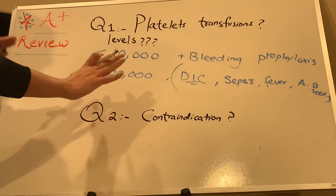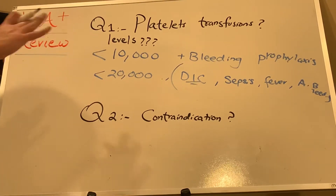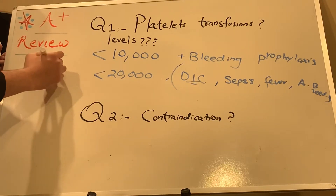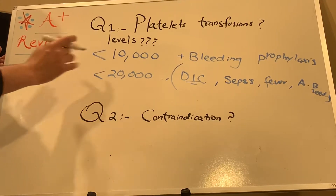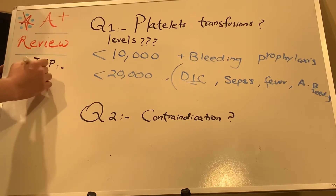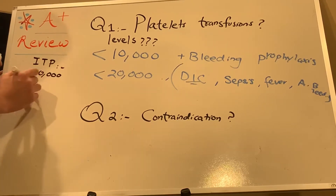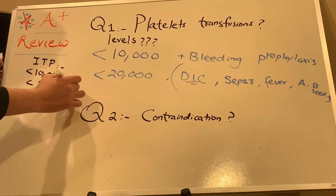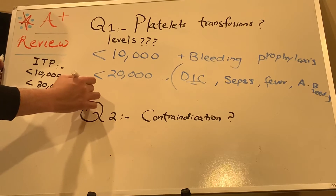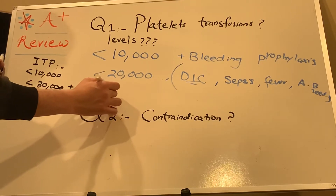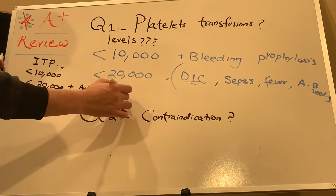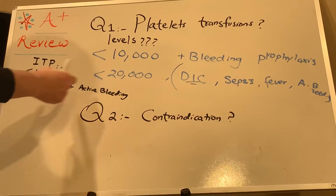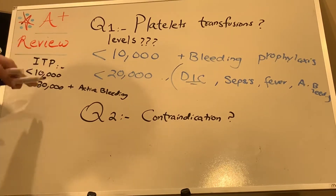Now, other than that, I'll go with the 50,000 level, but before that let's talk about ITP — what are the things we need to remember for ITP and what are the levels? It's slightly different: less than 10,000 you have to give, and less than 30,000 with active bleeding. For kids, you do observation, and if there is active bleeding, corticosteroids. But when we give platelets in ITP, this is the criteria.